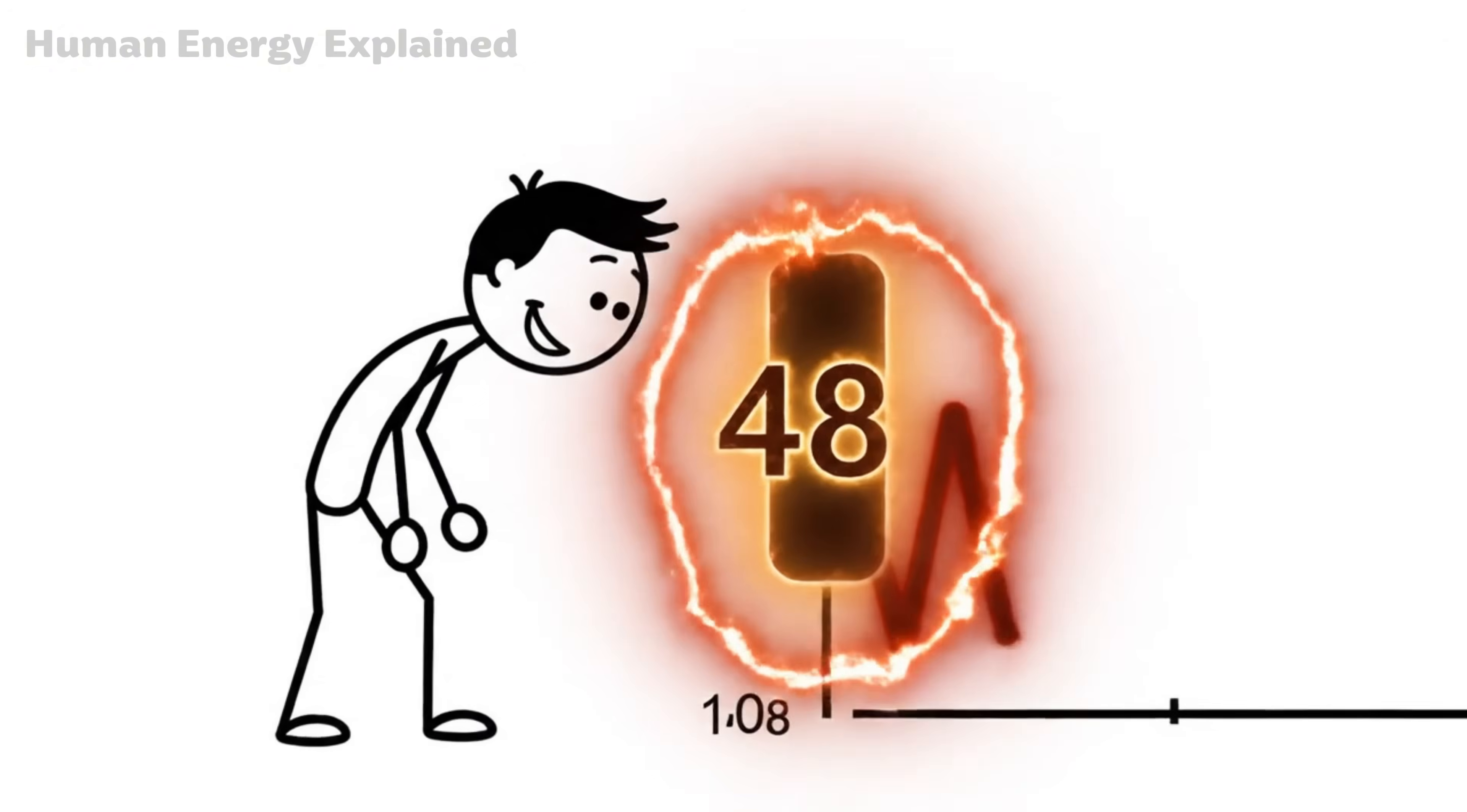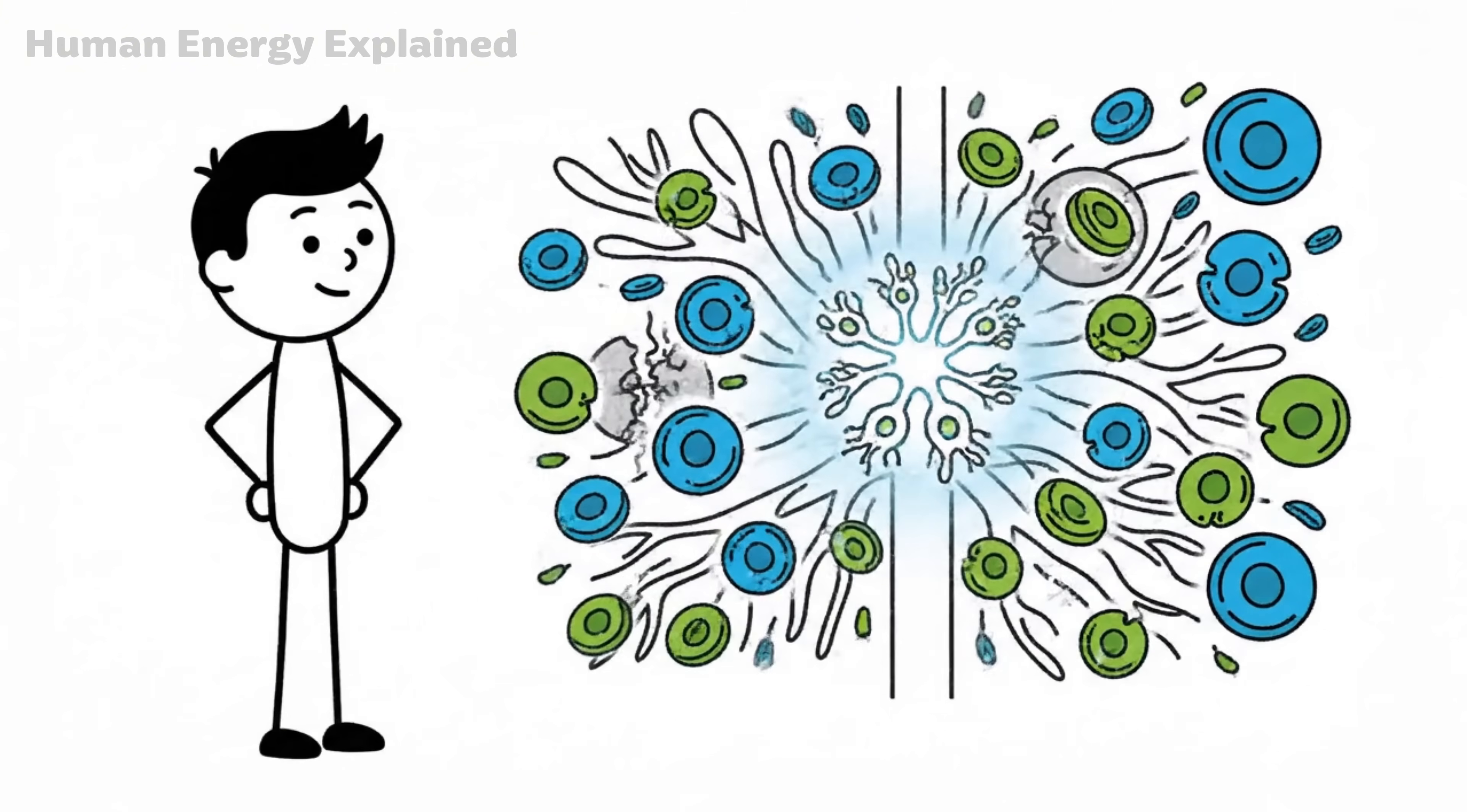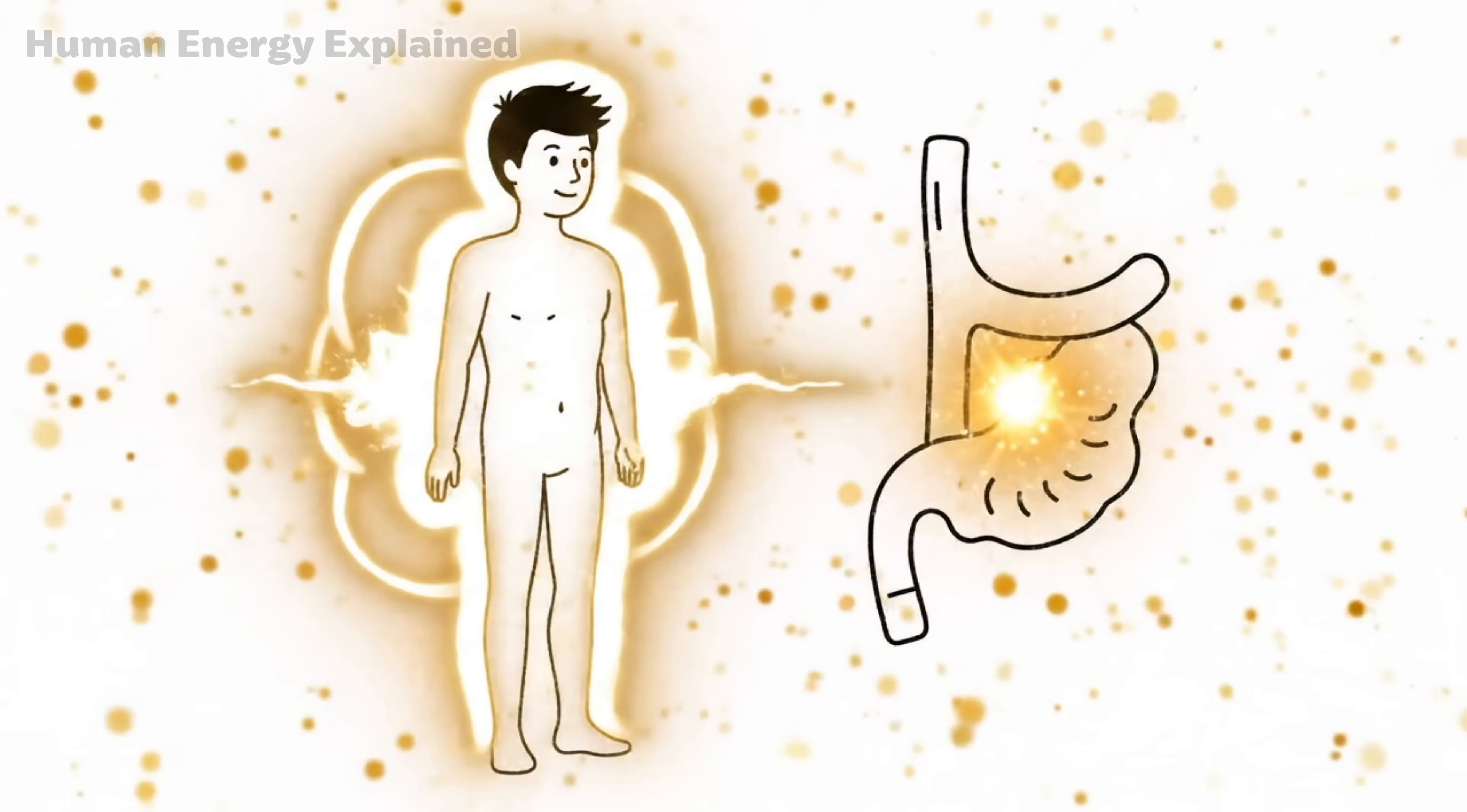But what if you push even further? Beyond 48 hours, you enter deep territory. Autophagy reaches peak levels. Your cells are in full clean-up mode. And something else begins to happen. Research from the University of Southern California has shown that extended fasting can trigger immune system regeneration. Old, damaged white blood cells get cleared out. Stem cells activate to generate fresh ones. It's like hitting a reset button on your immune system. Some studies suggest this can help cancer patients recover immune function after chemotherapy. The body's regenerative capacity, given enough time and the right conditions, is remarkable. Your gut begins preparing for renewal. Inflammation markers continue to drop. The body enters a state of deep repair that few people ever experience.